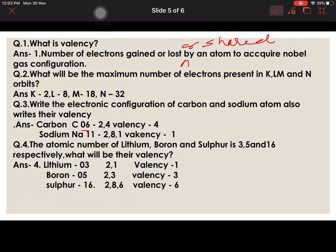Question 4: The atomic number of lithium, boron, and sulfur is 3, 5, and 16 respectively, what will be their valency? When we write in shells, lithium is 2, 1, boron is 2, 3, and sulfur is 2, 8, 6. So valency will be 1, 3, and 6. Sorry, sorry. Here in case of sulfur, the valency will be 2 because 8 minus 6 will be 2. Valency of lithium will be 1 and valency of boron will be 3.